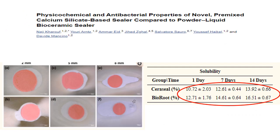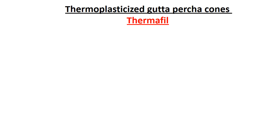Another study by Naji Kharuf stated that Ceraseal has around 10.7% solubility and BioRoot 12.7%. This indicates that the single cone technique is technique-sensitive and depends heavily on the type of sealer being used.